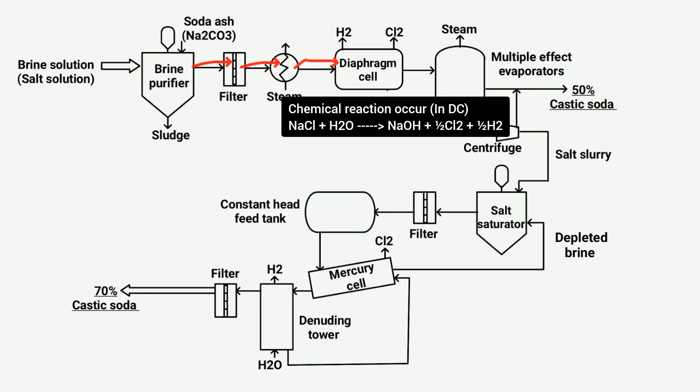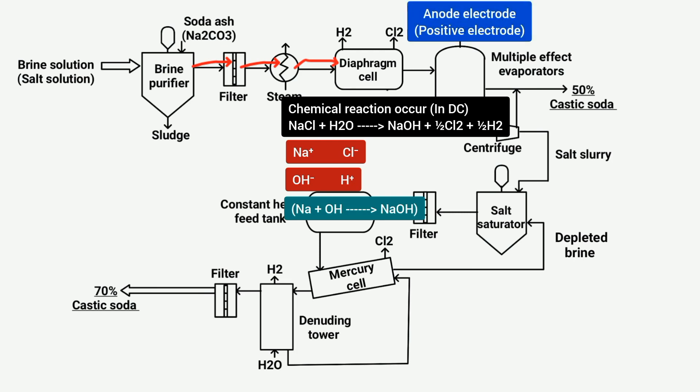Through this process, sodium chloride in the solution breaks down into sodium and chlorine ions, while water decomposes into hydroxide and hydrogen ions. Sodium and hydroxide ions combine to form caustic soda. Chlorine ions migrate to the anode due to their negative charge, and hydrogen ions move to the cathode due to their positive charge. As a result, chlorine and hydrogen are obtained as by-products of the reaction.